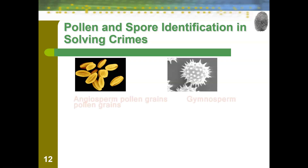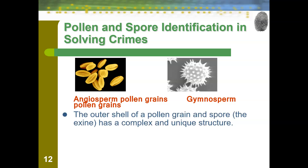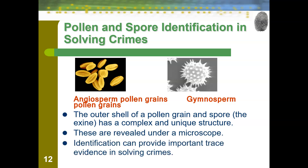For pollen and spore identification, specialists use high-powered microscopes. Different types of pollen look very different — one from an angiosperm and one from a gymnosperm, for example. This is why different plants can only pollinate their same type of plant. The outer shell of a pollen grain or spore is called the exine, and it has a complex and unique structure. The angiosperm pollen kind of looks like oatmeal, while the gymnosperm pollen looks like a spiky fidget toy. These are revealed under a microscope and can identify what plant the pollen came from, making it important trace evidence.